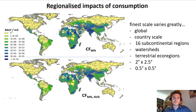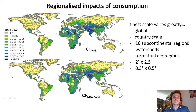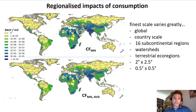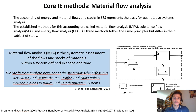One big research frontier in life cycle assessment is the regionalized impact assessment of consumption. For example, to have not just an average water footprint of vegetables but to go down to the watershed level, to really distinguish between food products farmed in regions with abundant water and food products from regions with potential water scarcity.